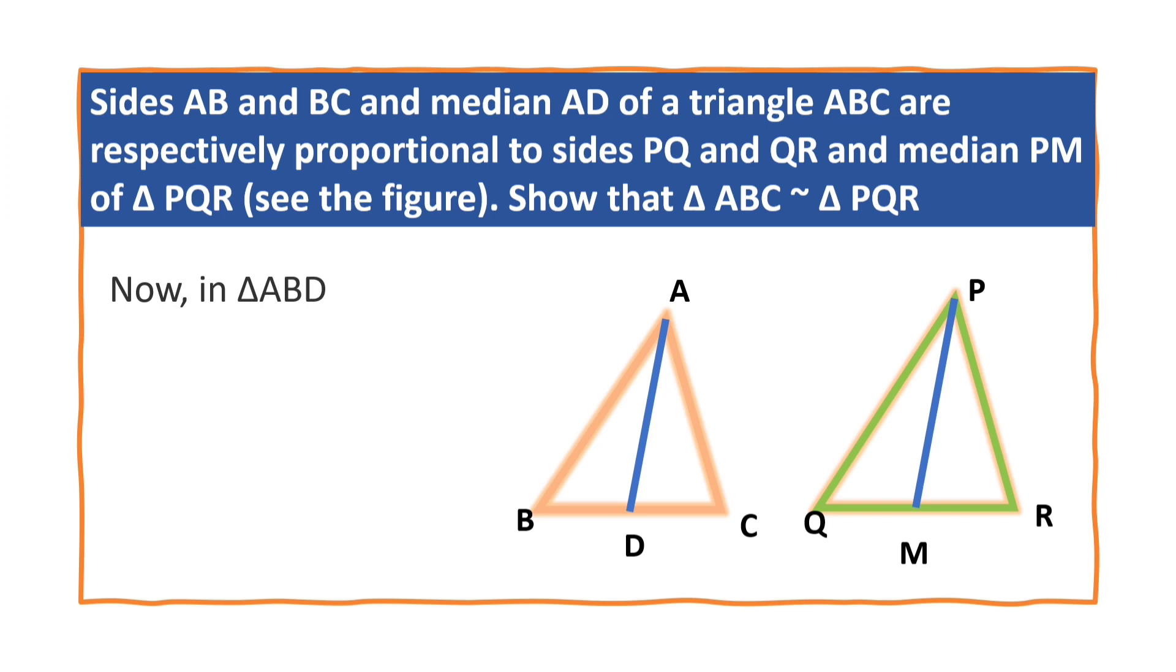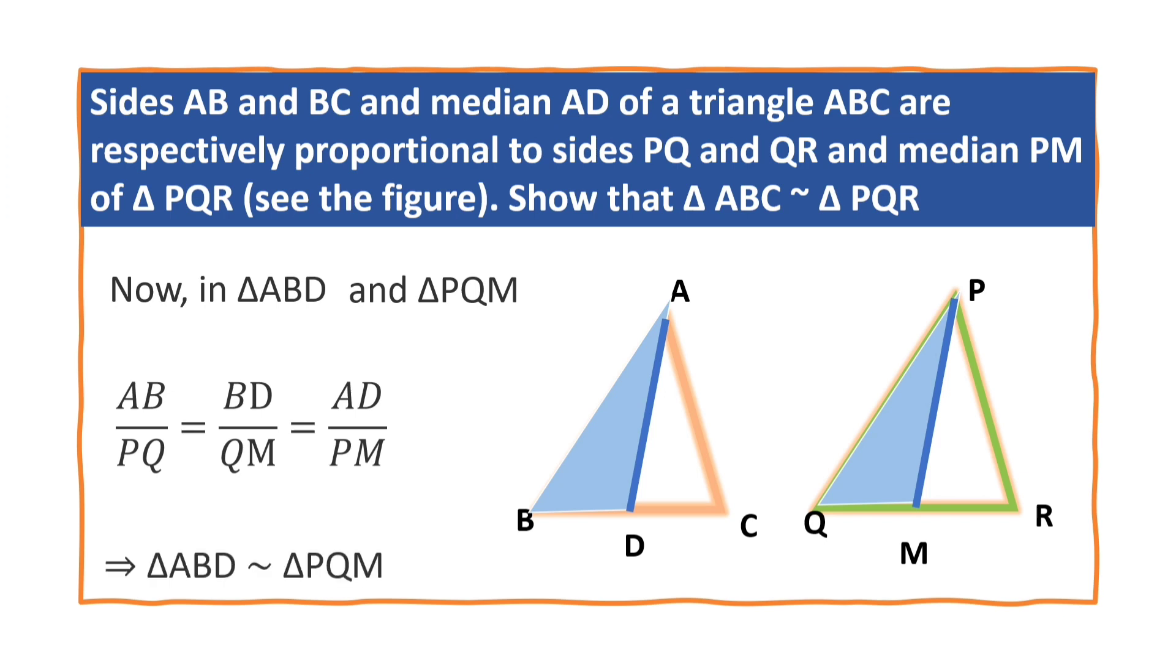Now, in triangle ABD and triangle PQM, we have AB by PQ is equal to BD by QM is equal to AD by PM. It means that triangle ABD is similar to triangle PQM. Why? Because of SSS criterion.